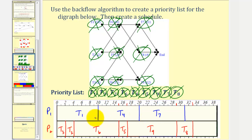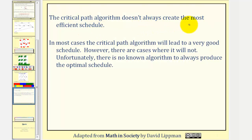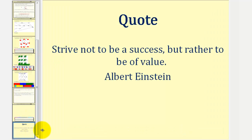Looking at our schedule, notice how processor one is idle from thirty-one hours to thirty-three hours — the time it takes to complete the entire project. Here's a look at the same schedule created by software. It should be noted that the critical path algorithm doesn't always create the most efficient schedule. In most cases it will lead to a very good schedule, however there are cases where it will not. Unfortunately, there is no known algorithm to always produce the optimal schedule. I hope you found this lesson helpful. Thank you.